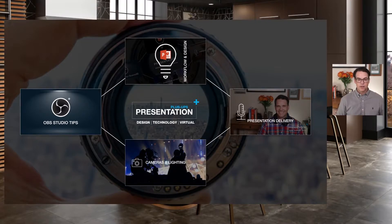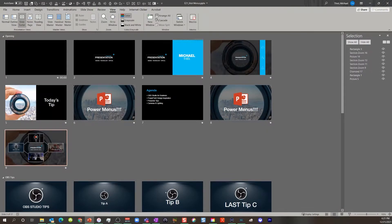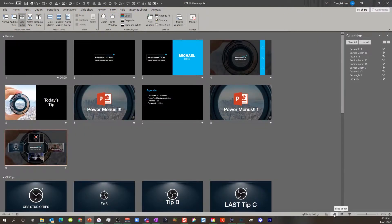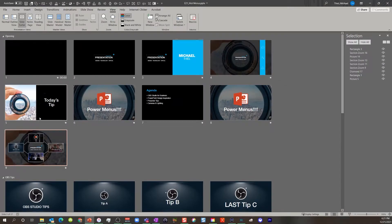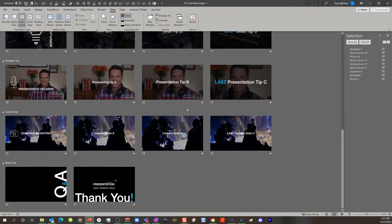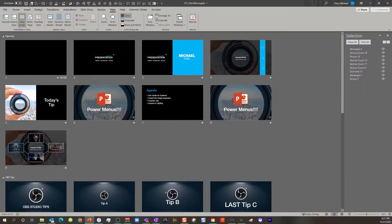So let's talk about how you make this happen. Step back into the content — I'm going to go into slide sorter mode. You can go View and then Slide Sorter, or hit Alt+W+I, or click the slide sorter icon at the bottom. Notice I have set up distinct sections: one for opening slides, a section called OBS Tips, a section called PowerPoint Design Inspiration, a section called Presenter Tips, and a section called Camera Tips. I also have a wrap-it-up section at the end with Q&A and thank you. To create a section, select in between a set of slides and click 'Add a Section.'